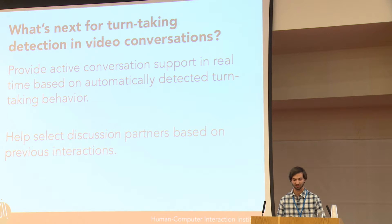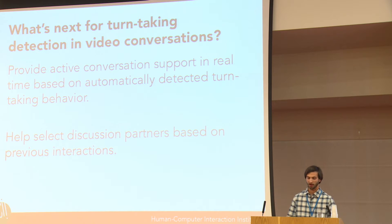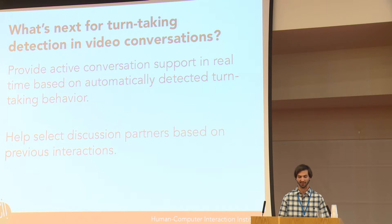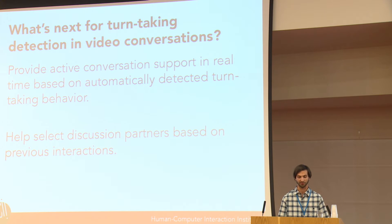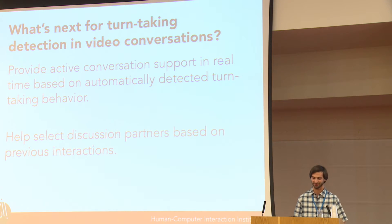By abstracting low-level features such as turn-taking behavior into metrics like dominance, it might be possible for systems like Talkabout to provide more active conversation support in real-time. For example, a system could provide interventions for participants who are dominating a conversation to remind them to let others speak, or encourage participants who haven't contributed to speak up. Additionally, by creating models of how participants interact based on turn-taking behavior, systems could use that as input for selecting discussion partners—placing a quieter participant into a group with more talkative members. We'll be releasing the code for the conversational turn detector and dominance metric; you'll find a link in the paper.